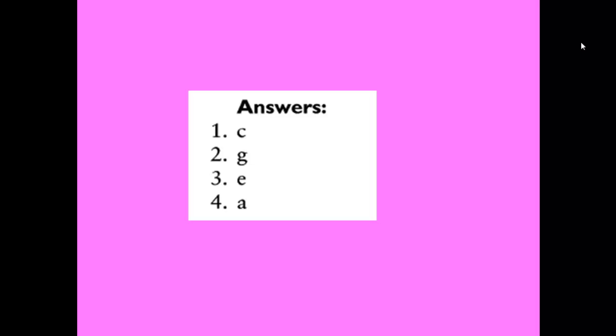The question was: Read the text on lasers. Combine the paragraphs with the headings in the book. There are 3 extra headings given. Here we have the first one, number A: uses of lasers, number B: lasers in the future, number C: the laser beam, number D: holograms.